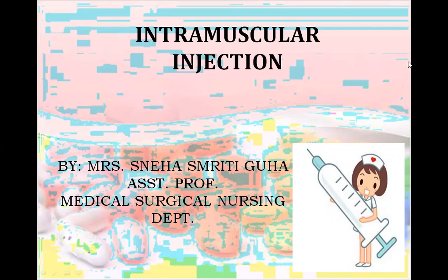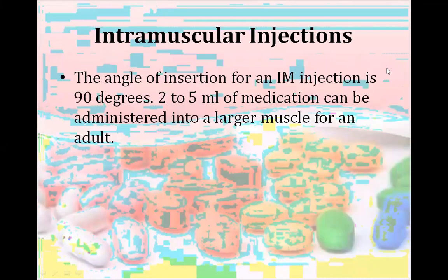In intramuscular injection, the angle of insertion is 90 degrees. When we insert an injection into the intramuscular area, the degree of the injection should be 90 degrees. Two to five ml of medication can be administered into a large muscle for an adult, depending upon the amount and availability of that particular medication.